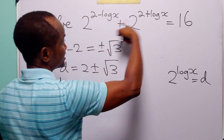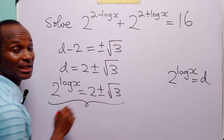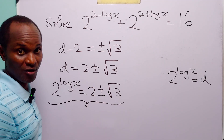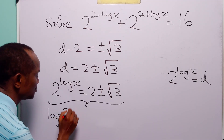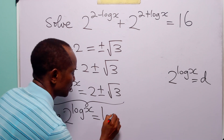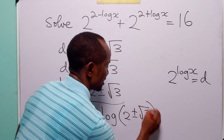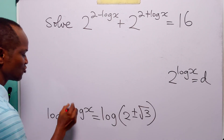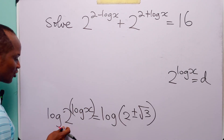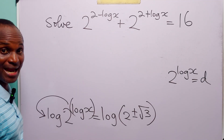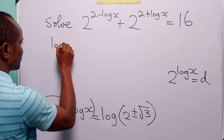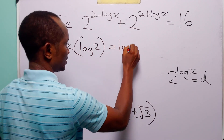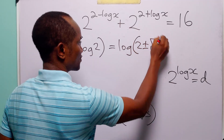We have reduced the original equation to a much simpler form. To solve this equation, since the unknown is in the exponent, we take log of both sides: log of 2 to the power log x equals log of 2 plus or minus the square root of 3. Applying the power rule of logarithms, we bring down the exponent log x to the front, giving log x multiplied by log 2 equals log of 2 plus or minus the square root of 3.